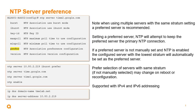When using multiple servers with the same stratum setting, a preferred server is highly recommended. Setting a preferred server ensures that NTP will attempt to keep the preferred server as the primary NTP connection. If a preferred server is not manually set and NTP is enabled, the configured server with the lowest stratum will automatically be set as the preferred server. Also note that preferred selection of servers with the same stratum, if not manually selected, may change on reboot.